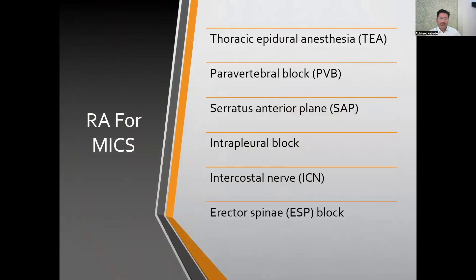The beauty of MICS lies in its very small incision, and if that incision becomes painless, patient satisfaction is incredible. Different institutes use different regional anesthesia techniques for analgesia in MICS: thoracic epidural anesthesia, paravertebral block, serratus anterior plane block, intrapleural block, and intercostal nerve block. We routinely place an erector spinae plane catheter for all MICS cases.